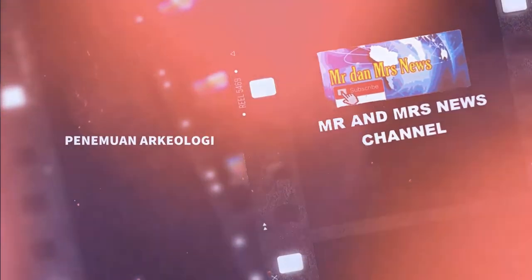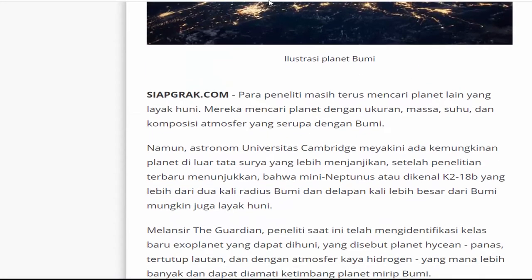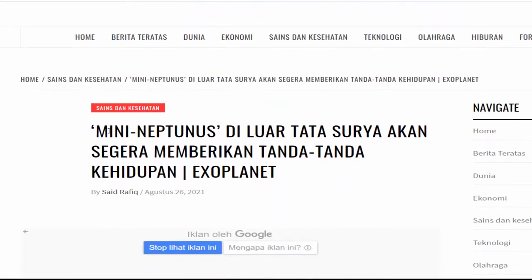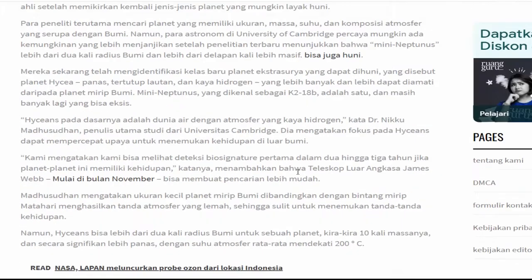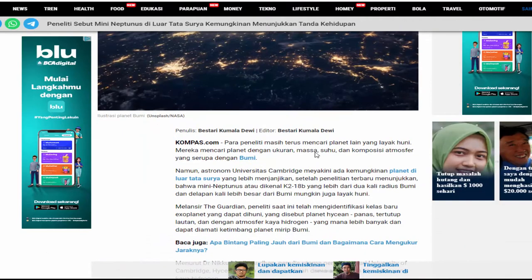This is a production of the U.S. Department of State. Tanda-tanda kehidupan di luar tata surya kita dapat dideteksi dengan 2 hingga 3 tahun, kata para ahli setelah memikirkan kembali jenis-jenis planet yang mungkin layak huni.